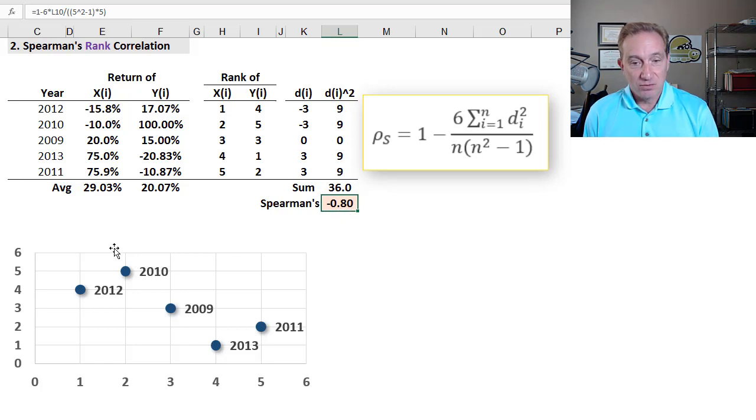And I get a Spearman's rank correlation of negative 0.8, and so, even a lower value, more negative, slightly stronger negative correlation than I would have got with a Pearson's product moment correlation, or just Pearson's correlation. So, that's the Spearman's rank correlation.